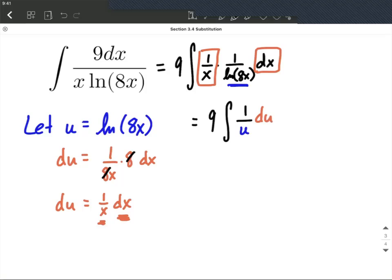So how do we take the anti-derivative of 1 over u? That's what this boils down to. The 9's going to come along. The anti-derivative of 1 over u is natural log of the absolute value of u with a plus c at the end. We include that plus c because it's an indefinite integral.